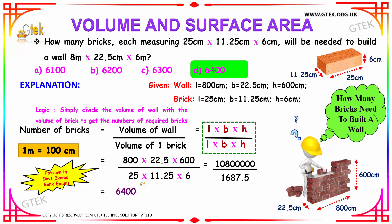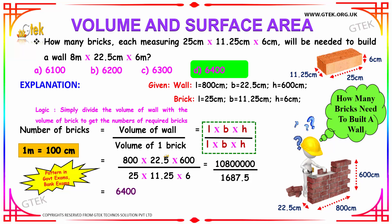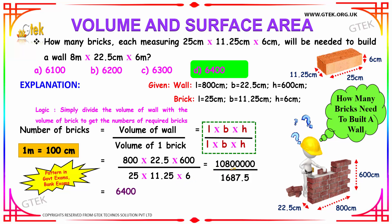It is 800 cm × 22.5 cm × 600 cm divided by 25 cm × 11.25 cm × 6 cm. Multiplying these values and simplifying, we get the answer as 6,400. Hence the number of bricks required to build a wall of dimensions 800 cm, 600 cm and 22.5 cm is 6,400 — that is option D.